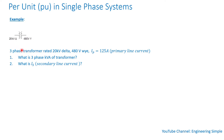Let's do a quick example. We have a three-phase transformer rated 20 kV delta / 480 V Y, and the primary line current is 125 amps. Question one: what is the three-phase kVA of the transformer? Question two: what is the secondary line current?